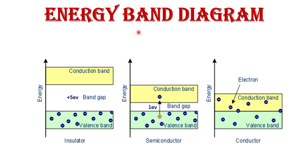Because electrons can move between neighboring atom orbits, the energy levels intermix and form a range of energy levels called an energy band. There are three types of bands: the filled band, the valence band, and the conduction band. The valence band is the highest occupied energy state containing valence electrons; the conduction band is the lowest unoccupied energy state containing free electrons.